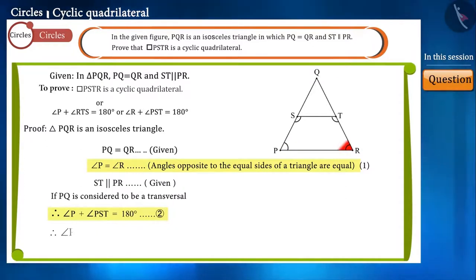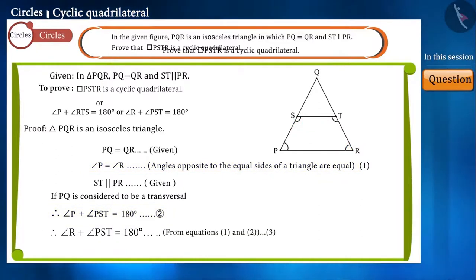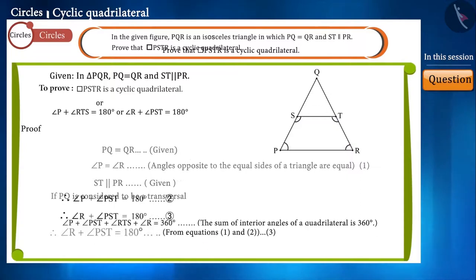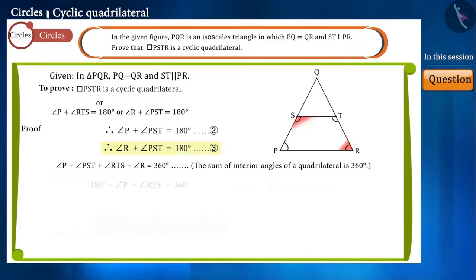We know that the sum of the four angles of a quadrilateral is 360 degrees, which will give us this equation. And the sum of these two angles is 180 degrees, so